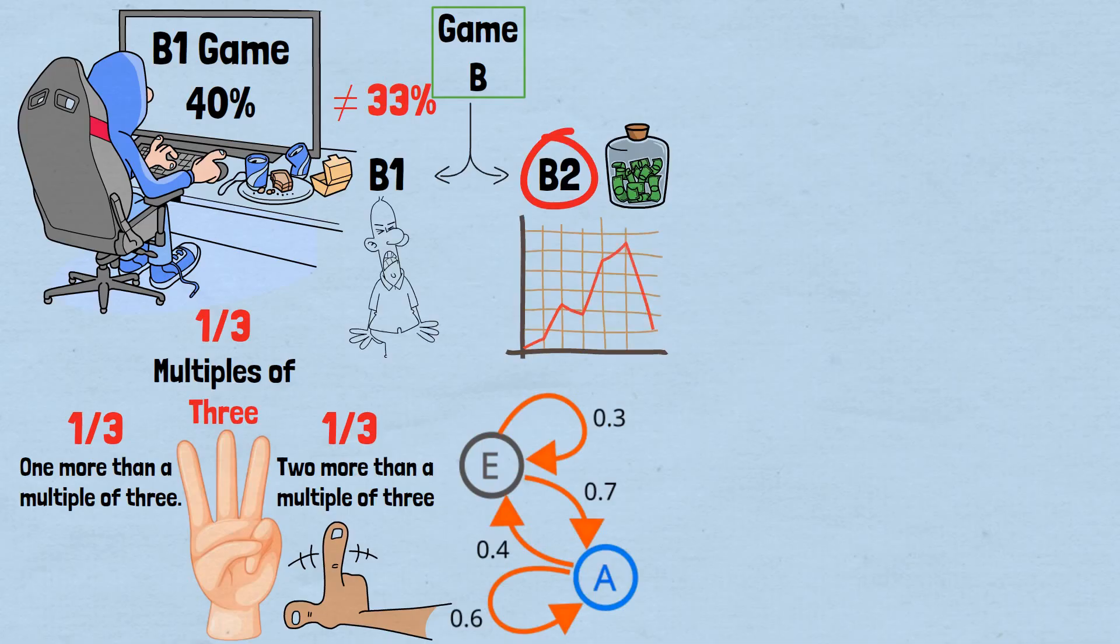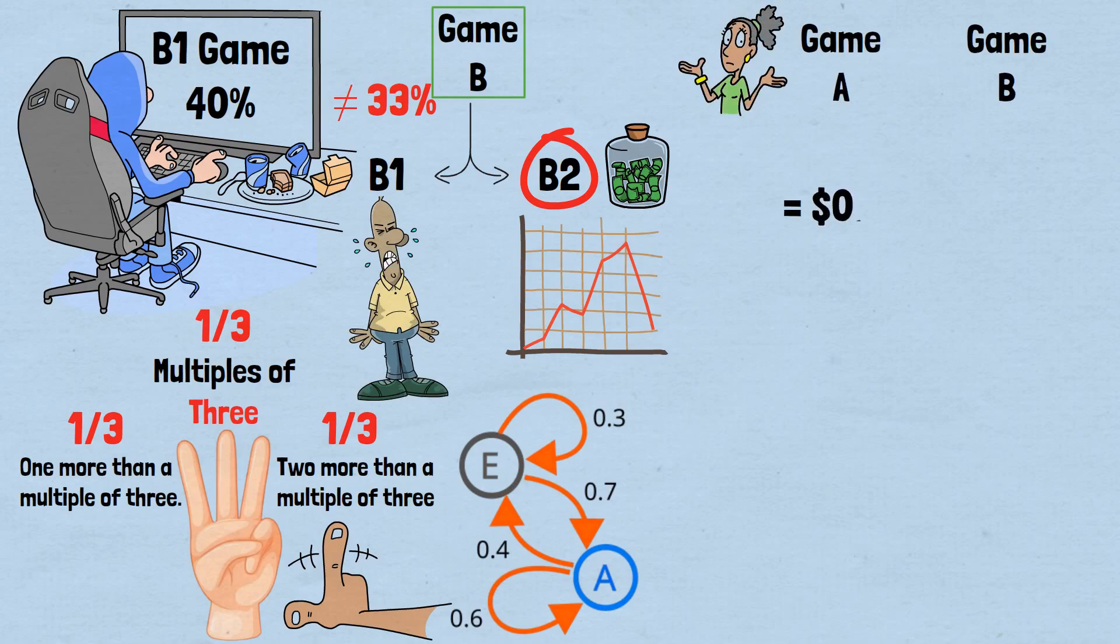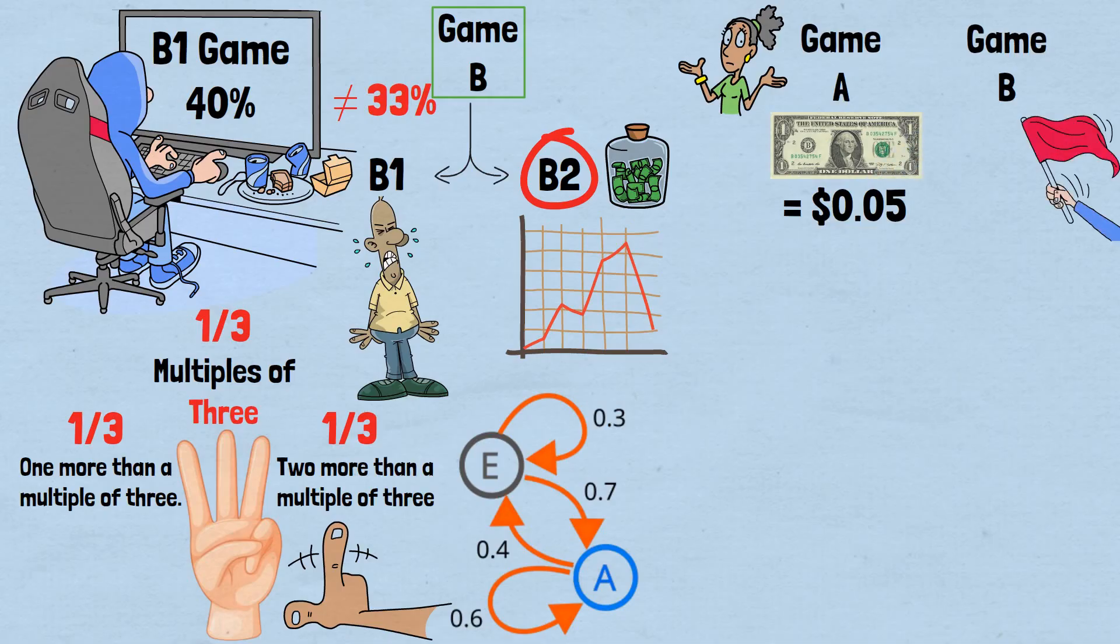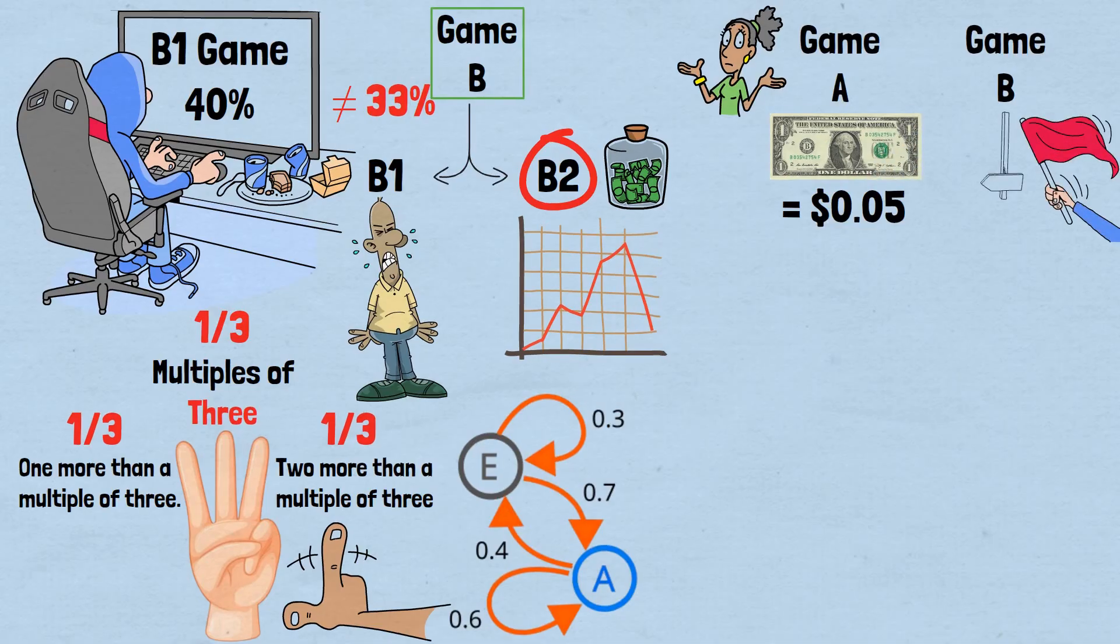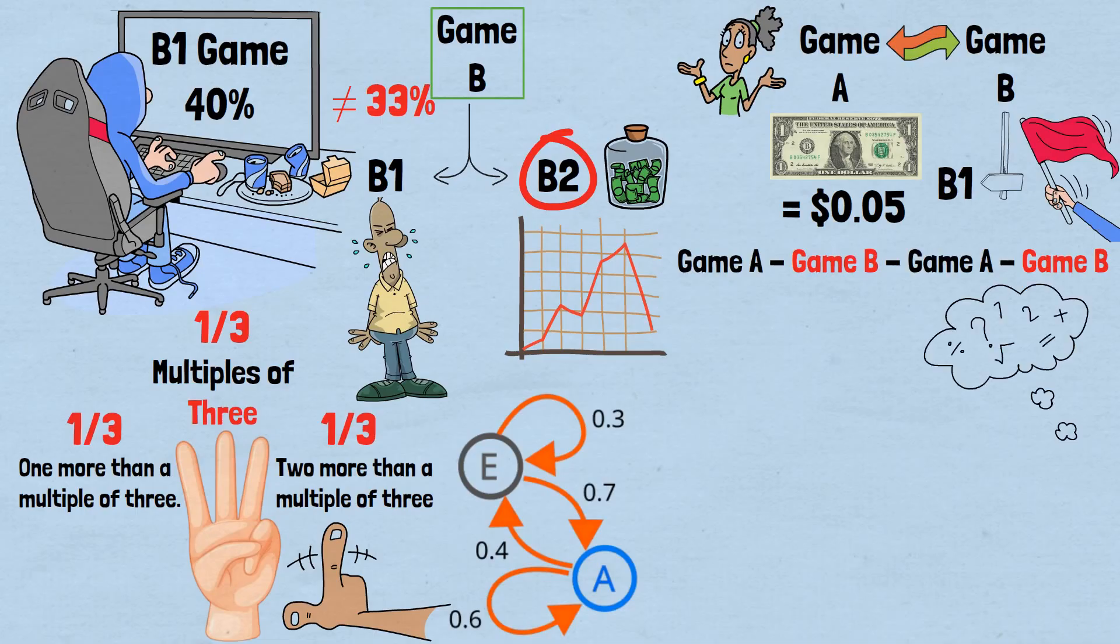In fact, it's often worse than Game A because B1 is so punishing when you're forced to play it. Now we have two games, each guaranteed to lose money over time. Game A loses about 5 cents per dollar bet. Game B loses even more due to the disproportionate impact of the terrible B1 sub-game. But when you alternate between these two losing games—playing Game A, then Game B, then Game A, then Game B—something mathematically magical happens. The combination generates consistent profits.